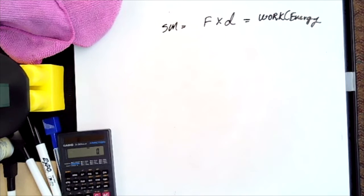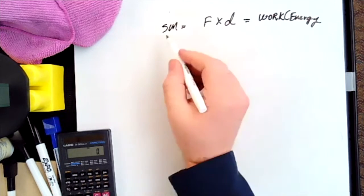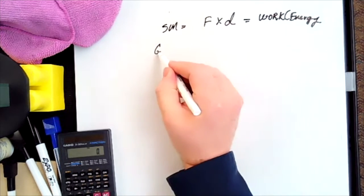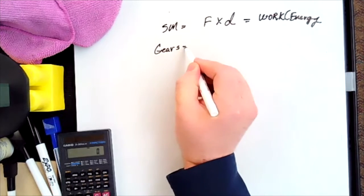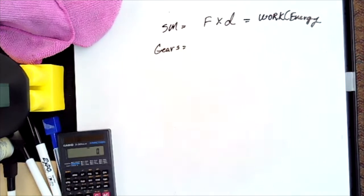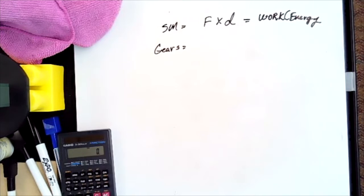Then we went to gears. What was the trade-off for gears? Big gear to a small gear — the trade-off was torque, which is like a force times a perpendicular displacement.